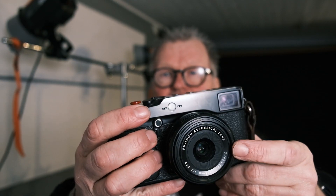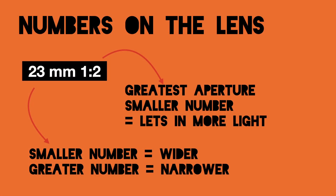The lens is the piece of glass that's shaping your images. There are different kinds of lenses, much to choose among. There are some numbers on the front of the lens. The first one is often the focal length of the lens. The smaller the number, the wider the lens is, and the greater the number, the narrower it will be.